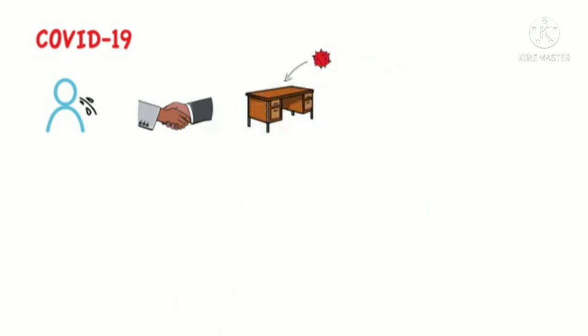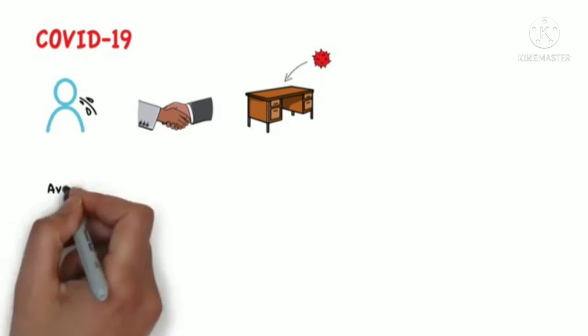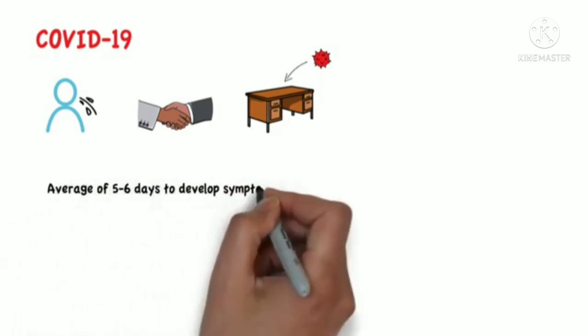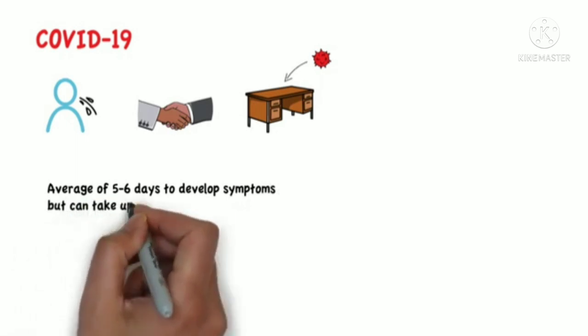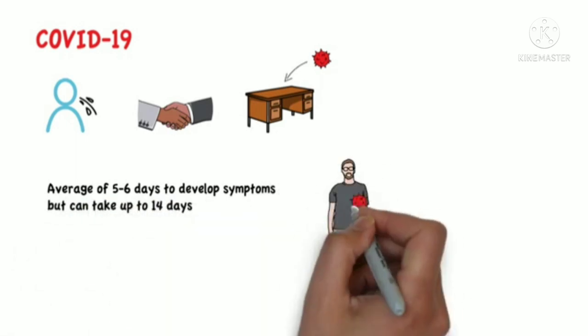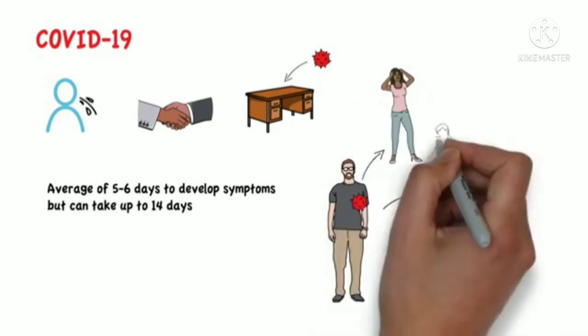Once someone is infected with the virus, it takes an average of five to six days to develop symptoms. However, that can take as long as 14 days, during which time the infected person can be contaminating others.